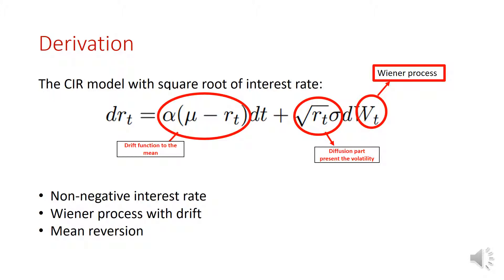The non-negative interest rate property follows quite obviously: since the diffusion part is a function of the square root of R_t, the condition requires R_t to be greater than or equal to zero. For mean reversion, consider the case where R_t is larger than mu by a large amount — there are two effects. First, the drift function becomes negative, pulling the whole process back down. Second, the volatility becomes very high as R_t increases, making it easier to revert to the mean.